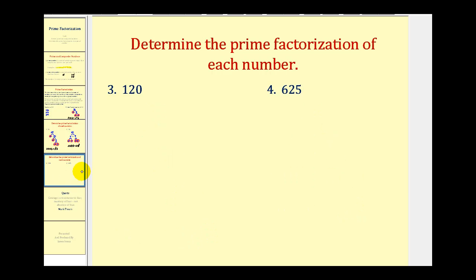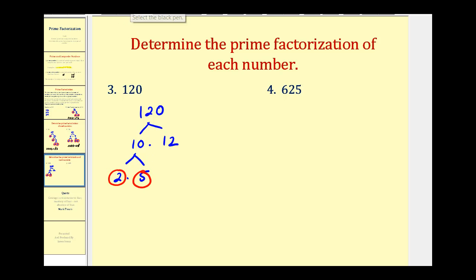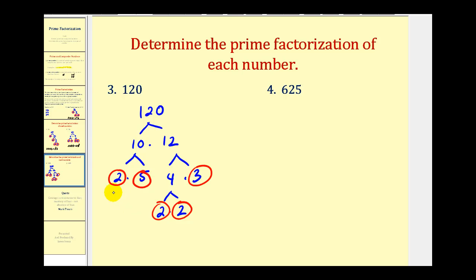Let's try one hundred twenty. Since it ends in a zero, we know it's divisible by ten — this would be ten times twelve. Neither of those are prime. Ten would be two times five, which are both prime, so we'll circle those. Twelve can be written as four times three, where three is prime. And then four can be written as two times two. So the prime factorization of one hundred twenty has three factors of two, one factor of three, and one factor of five — or using exponents, two to the third times three times five.